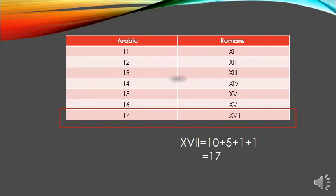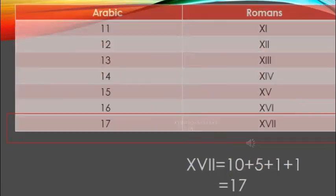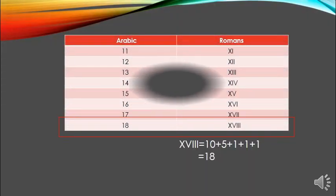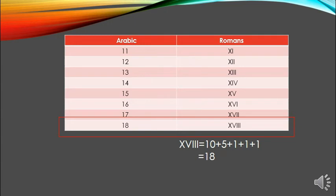17 represents XVII. So X equals 10, V equals 5, and II represents 1 plus 1. So add both these values: the answer is 17. So 17 represents XVII.